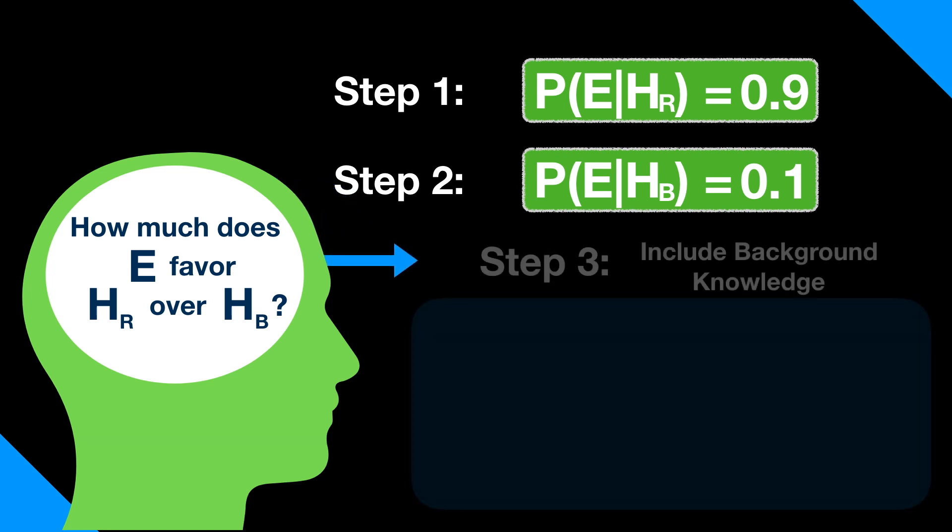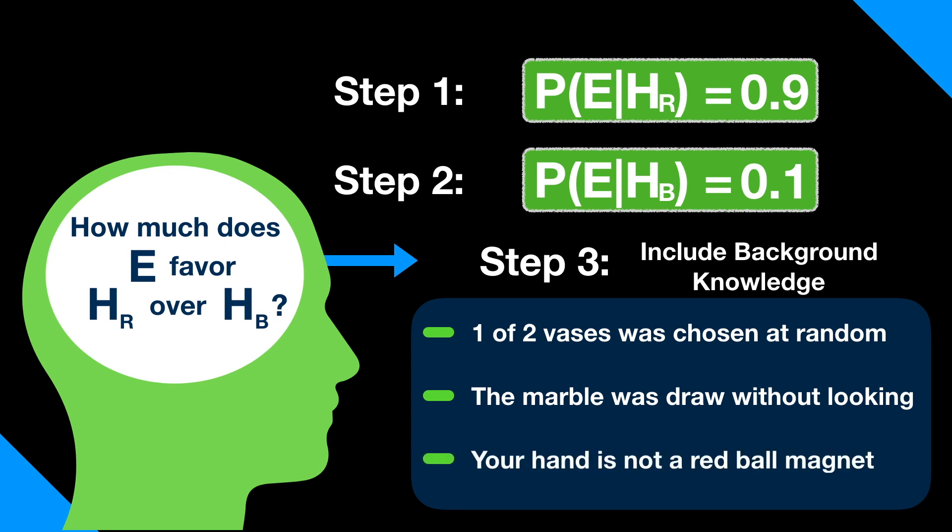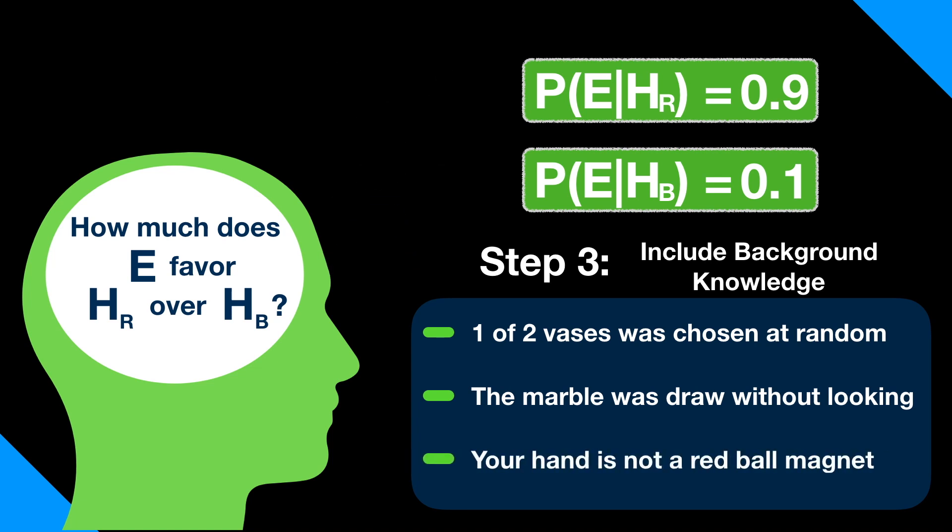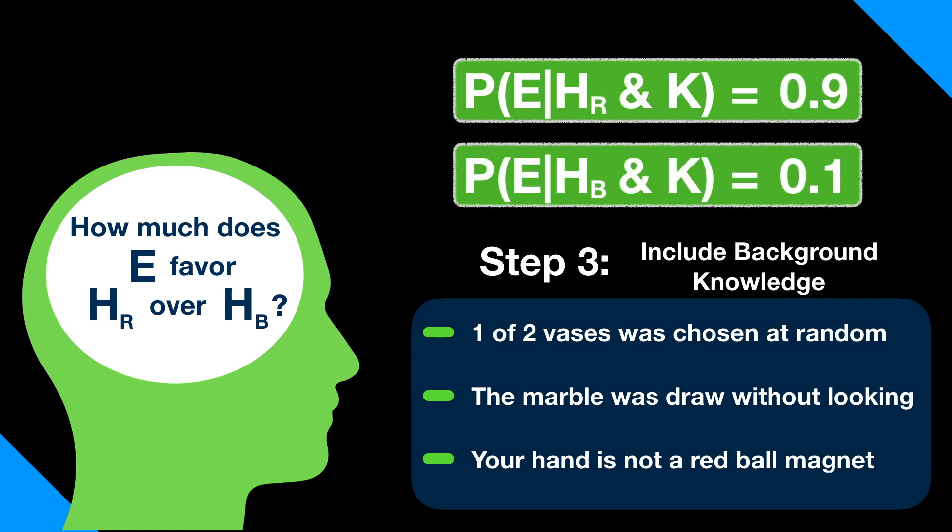We're missing something, though, namely our background knowledge. This would include things like the fact that you chose one of two vases at random, you drew a marble without looking, and your hand is not some kind of red ball magnet. All of those factors affect our epistemic probability, so we need to include this information, called our background knowledge, using the symbol K. This gets us halfway to our answer.